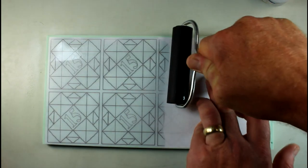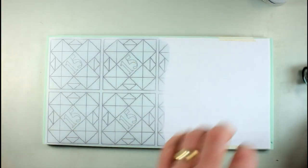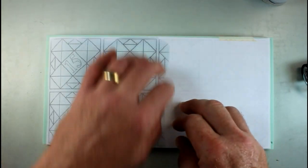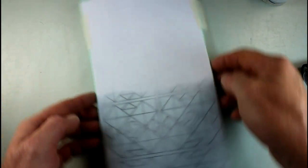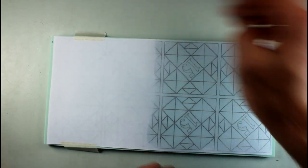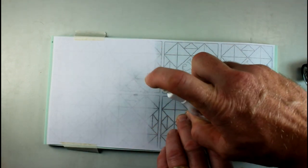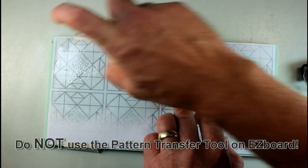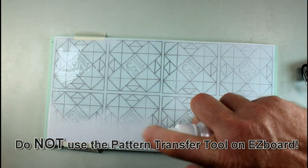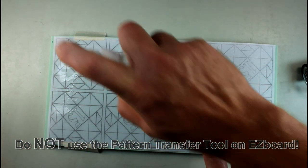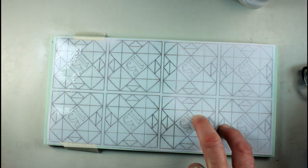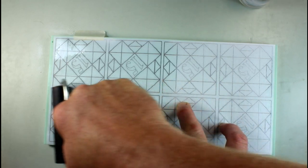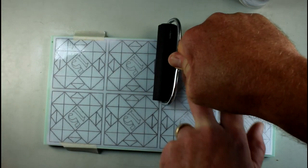Press down firmly across the top of the pattern and instantly the pattern will transfer. Now I'll turn my board around and repeat the same technique. Notice that one firm pass with the rubber roller is all that it takes.